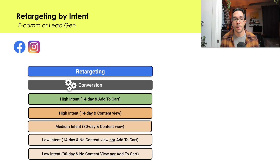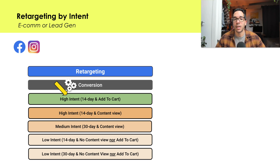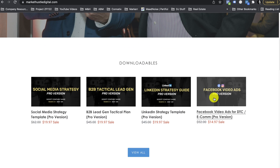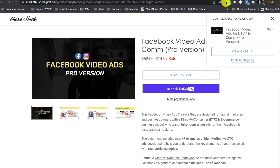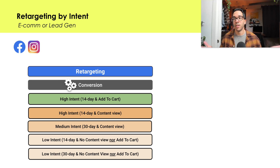This here is retargeting by intent. In digital, we look at signals that indicate a consumer has a higher propensity to purchase or convert. The first example at the top is a 14-day audience — someone who's been to the website within 14 days and triggered the add-to-cart conversion standard event. We can justify that they have high intent because not only have they gone to the website, they've looked at a product and added it to cart. People typically only add things to cart when they're going to buy or want to confirm the final price.